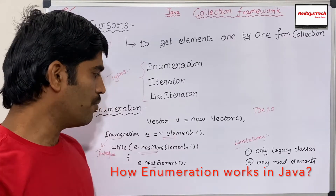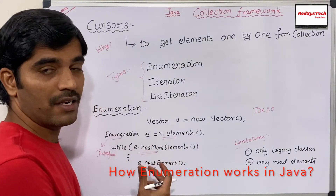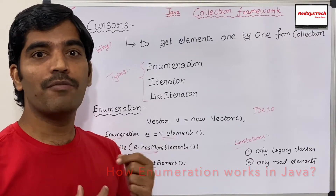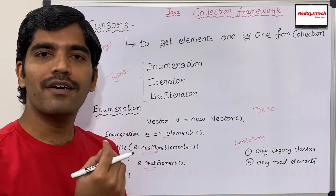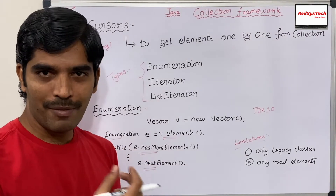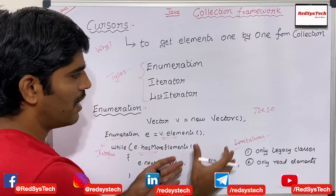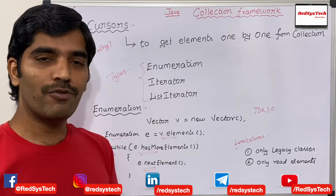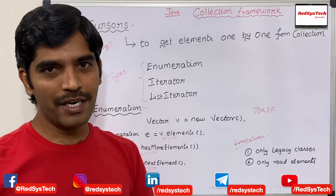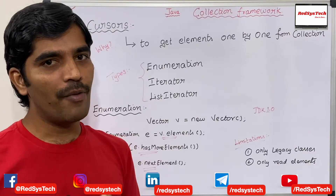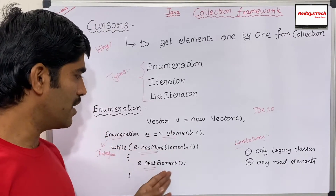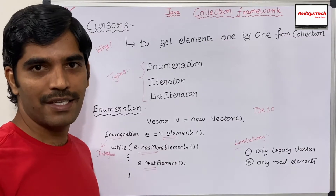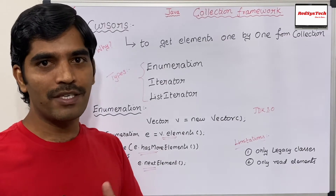Another limitation is that you can only read elements from the collection — you cannot make any updates or remove elements from the collection framework. These are the limitations of enumeration. Now I am going to write a real-time program: a student database example showing how to use enumeration to iterate over all student records inside a student collection.